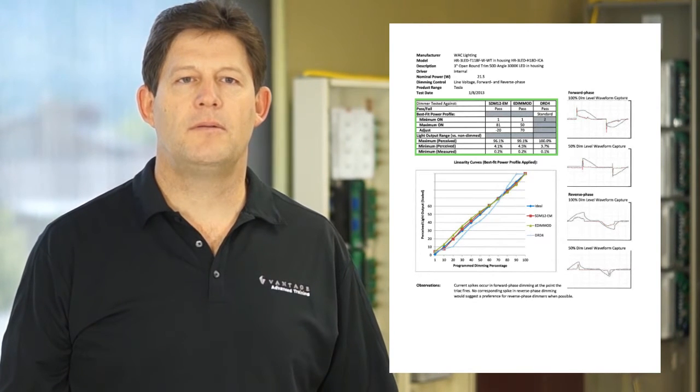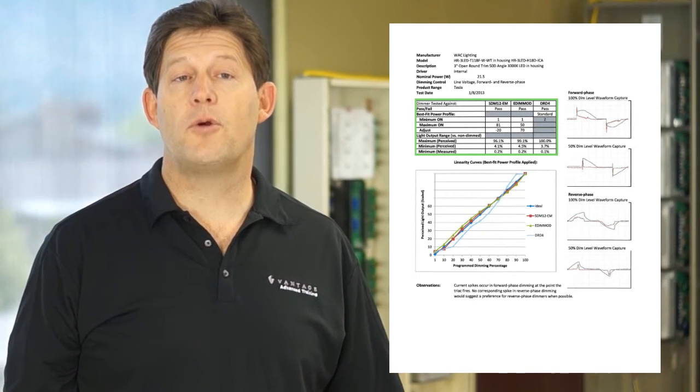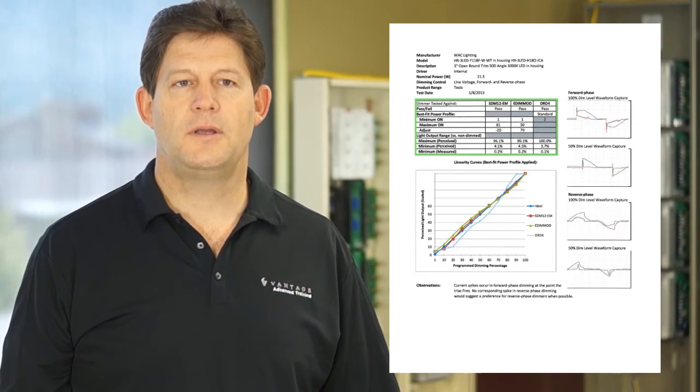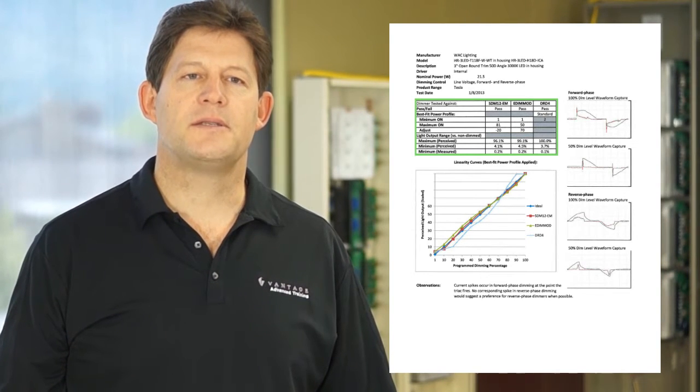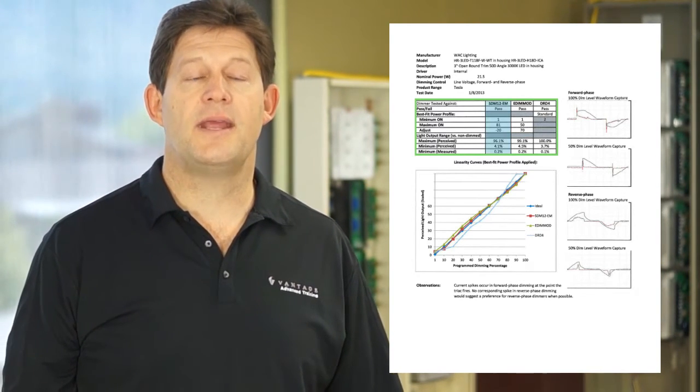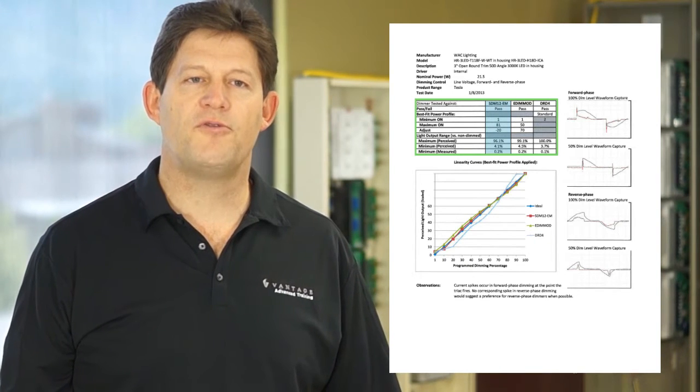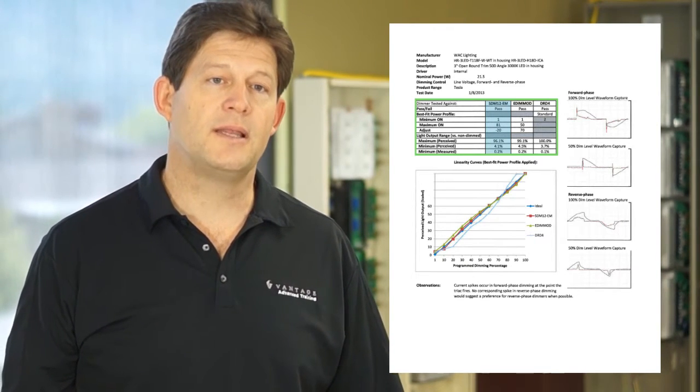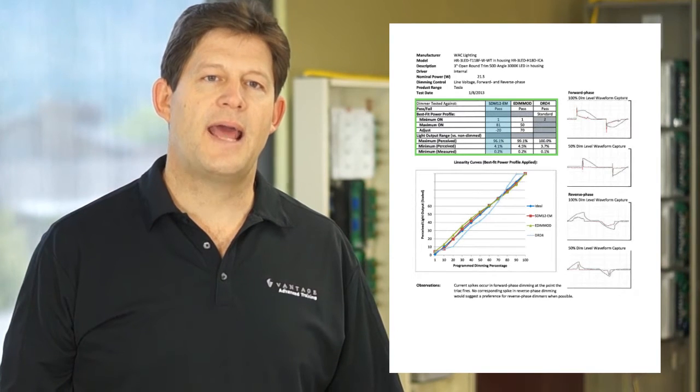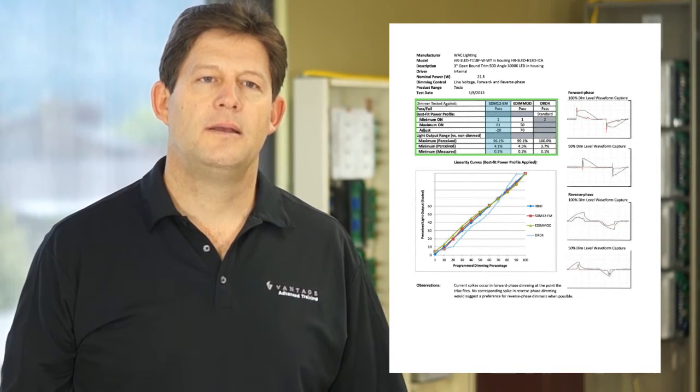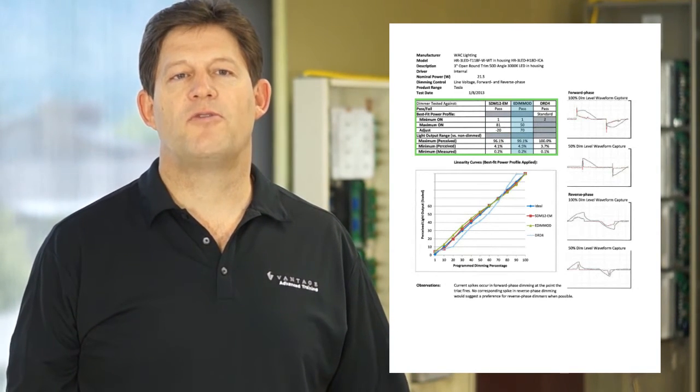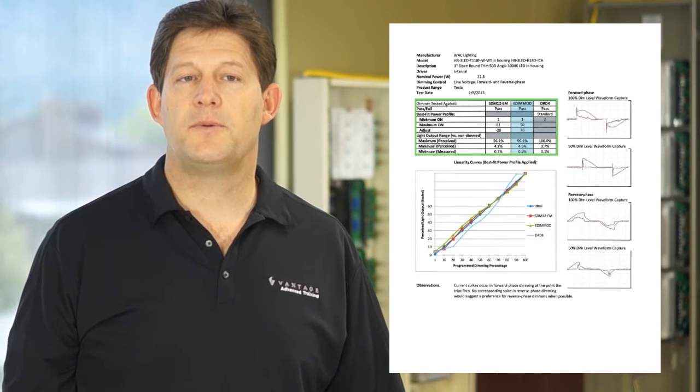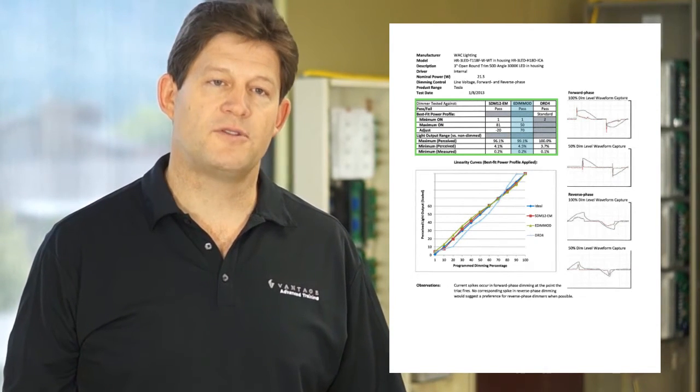In this particular sample, which is compatible with either forward phase or reverse phase dimmers, we show performance against the standard dimmer module, model SDM12-EM, representing the line of forward phase dimmers, including the scene point dimmer, standard DIN dimmer, and so on. The next column represents performance against the EDIM mod, representing all Vantage native reverse phase dimmers.